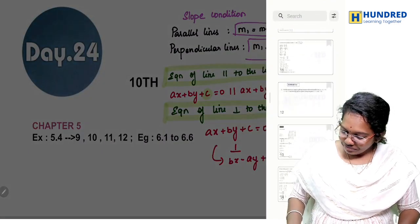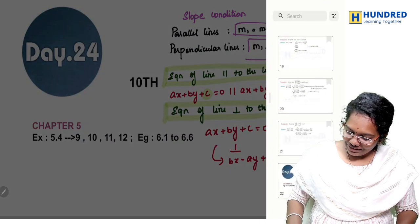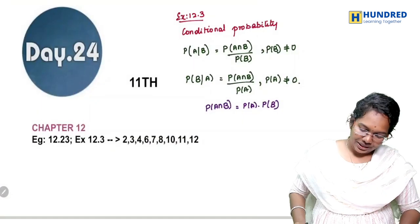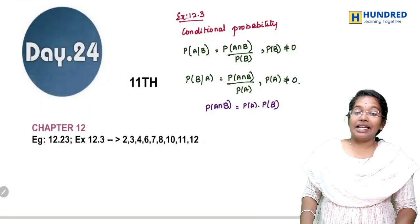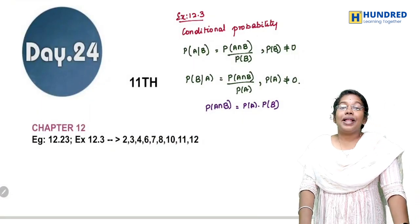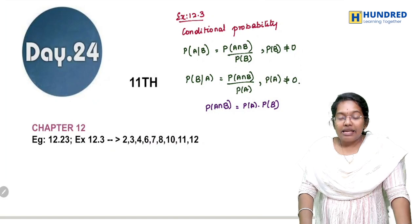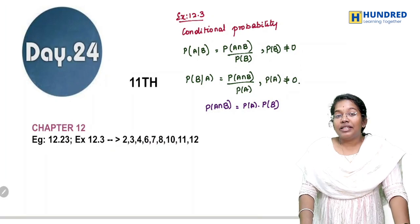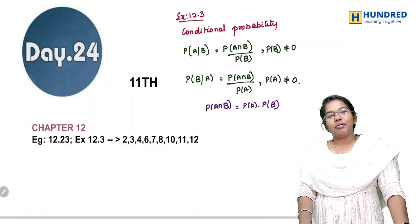So let's move to 11th Standard Students. 12th Chapter — in this chapter, 12.3, which is Conditional Probability.